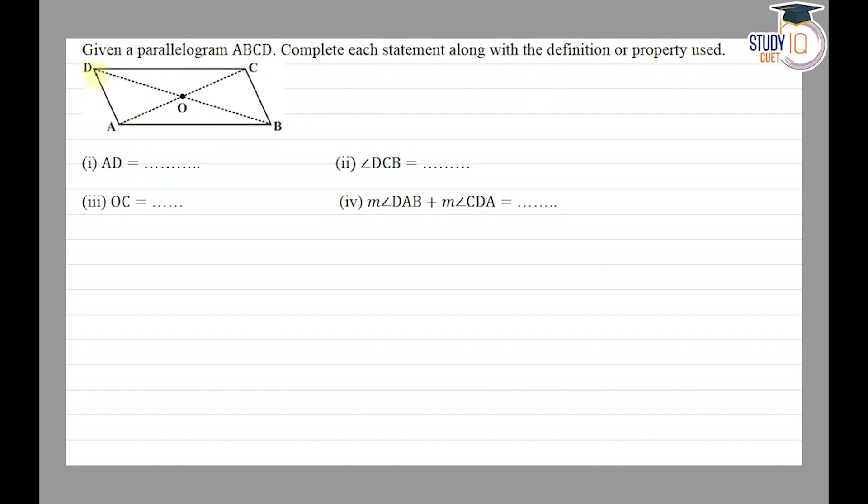So AD is equal to BC because opposite sides of parallelogram are equal. DCB is equal to DAB.